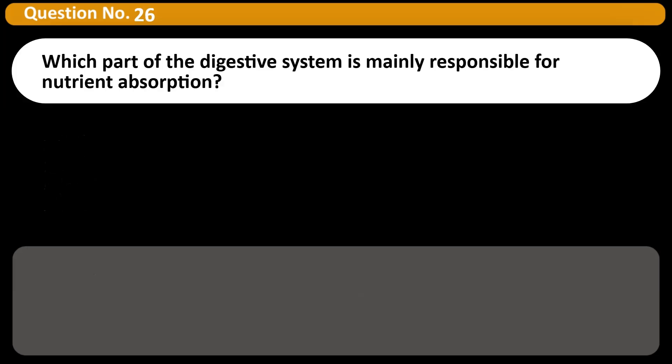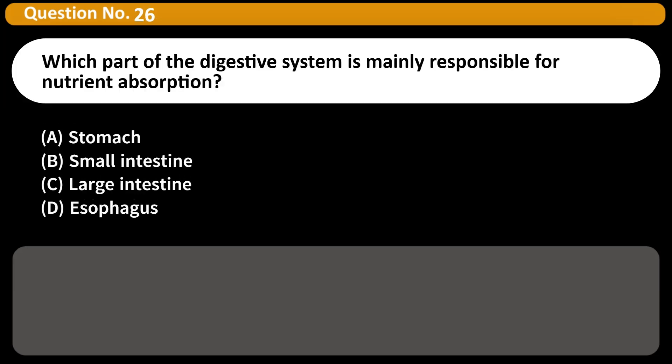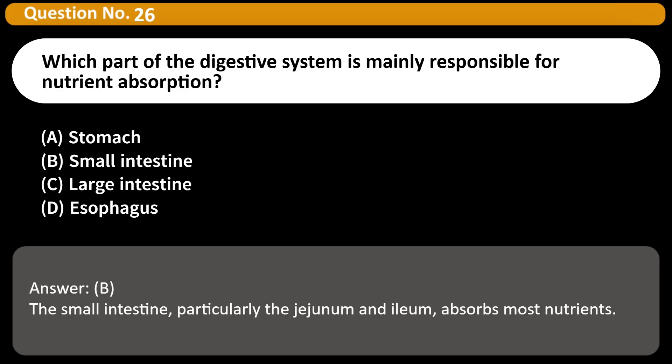Which part of the digestive system is mainly responsible for nutrient absorption? A) Stomach, B) Small intestine, C) Large intestine, D) Esophagus. Answer: B. The small intestine, particularly the jejunum and ileum, absorbs most nutrients.